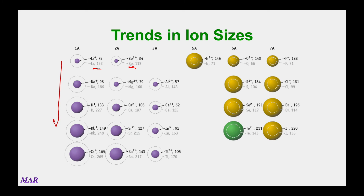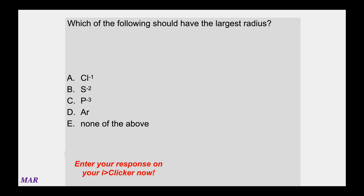Some ions don't follow the trend perfectly — for example, telluride versus iodide, and selenide versus bromide. So I'm getting a bit cynical again. The overview is: generally left and down they get bigger, obviously not all of them as I just showed, but if you have to guess and you don't have a smartphone, left and down works pretty well — but only compare anions to anions and cations to cations.